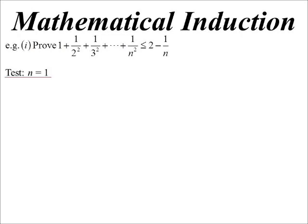So first case, n equals 1. Left hand side is 1. Right hand side, 2 minus 1 on 1, yes, that is 1. And it's true that 1 is less than or equal to 1.